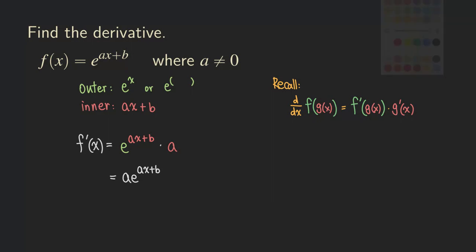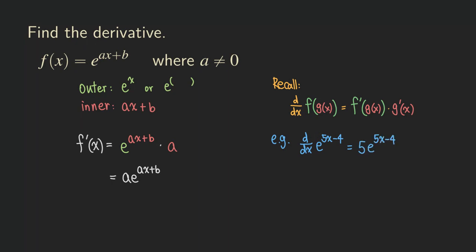Now let's try different examples. If we want the derivative of e to the 5x minus 4, then a is 5, so the derivative is 5 times e to the 5x minus 4. Let's try another one: e to the negative x. Here b is zero and a is negative 1, so the derivative is negative 1 times e to the negative x.